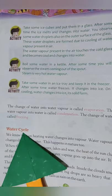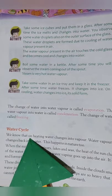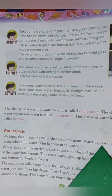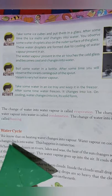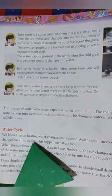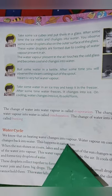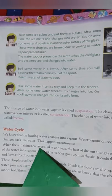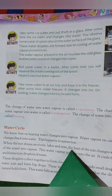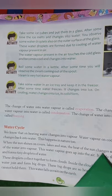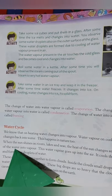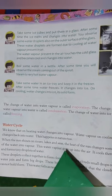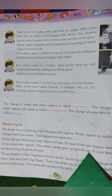Water cycle: We know that on heating water changes into vapor. Water vapor on cooling changes back into water. This happens in nature too. When the sun shines on rivers, lakes and seas, the heat of the sun changes some of the water into vapor.